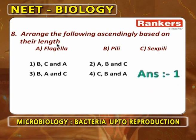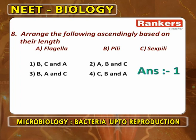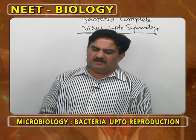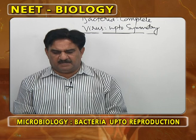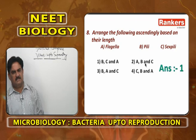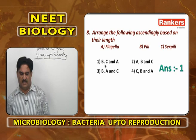Arrange the following based on their length: Pili is the smallest, sex pili is slightly larger than pili, and flagella are definitely the largest. So the answer is: Pili, Sex Pili, Flagella. Pili help in attaching the bacterial cell to objects; sex pili are useful in forming the conjugation canal during conjugation.